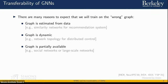There are even cases where the application itself does not allow a specific fixed graph — for example, if the graph is dynamic, as in decentralized control problems where the network topology changes as agents move, or because the graph is only partially available as part of a large-scale network that, due to computational or cost issues, we don't have access to in full.